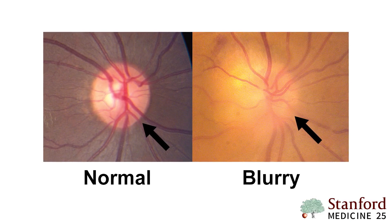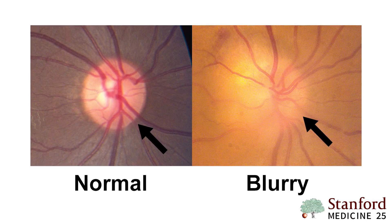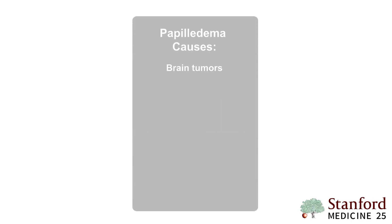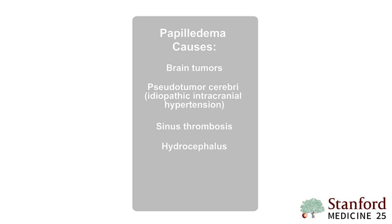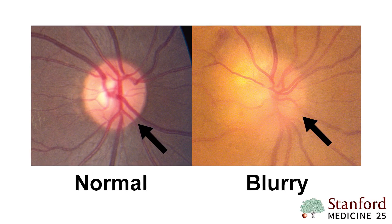Now let's talk about abnormal findings. By far and away, one of the important things to look for at the optic disc is optic disc blurring. Optic disc blurring in the setting of increased intracranial pressure is referred to as papilledema. Papilledema can be caused by anything that increases pressure in the brain, such as brain tumors, pseudotumor cerebri, sinus thrombosis, hydrocephalus, meningitis or encephalitis, and malignant hypertension. It should also be noted that optic neuritis also causes optic disc blurring, but that is caused by inflammation of the optic nerve, not from increased pressure in the brain.